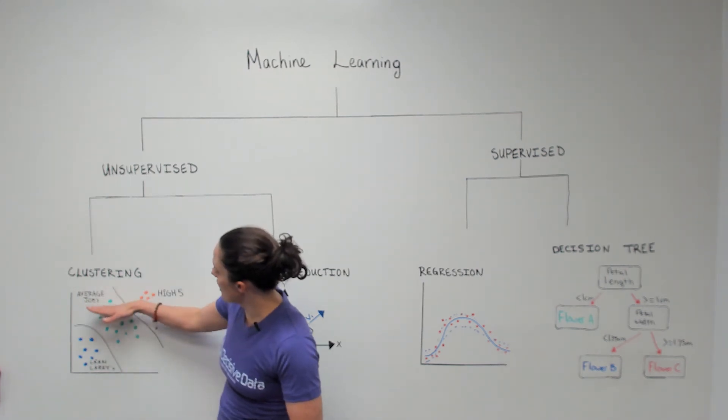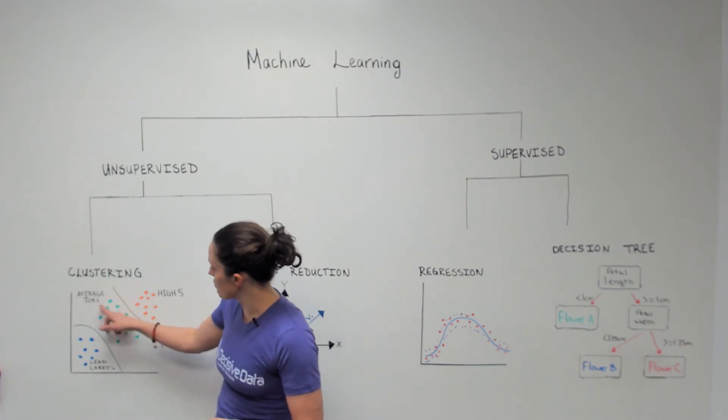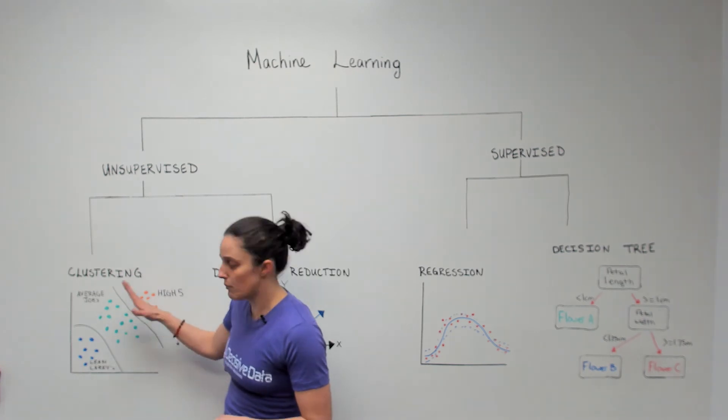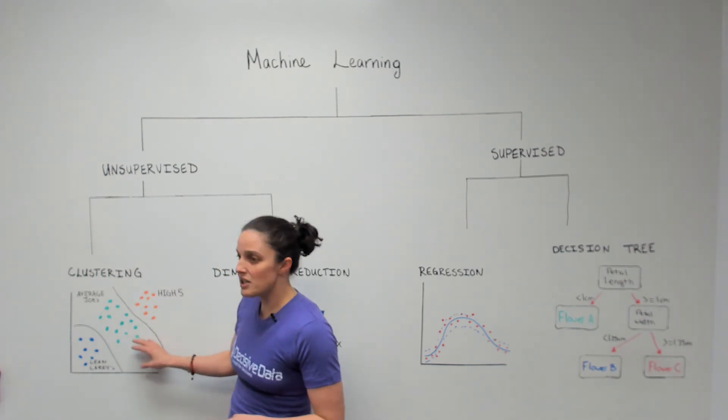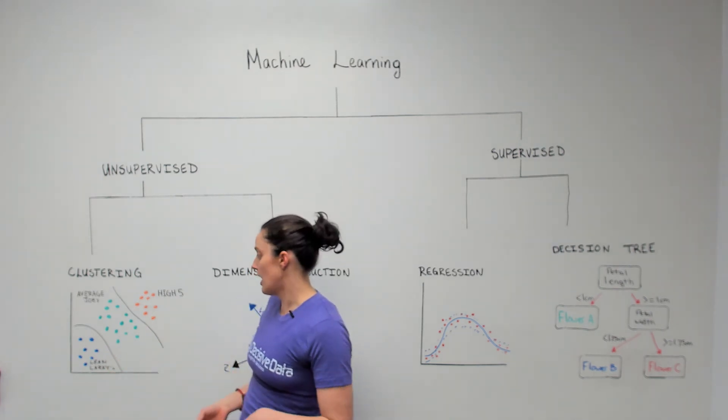And maybe the next time it was drawn like this where these guys were considered the average Joes and these guys were considered the high-fivers. And eventually it found an optimum place to place that line so that we can best represent these two different groups and then target them in a marketing campaign.